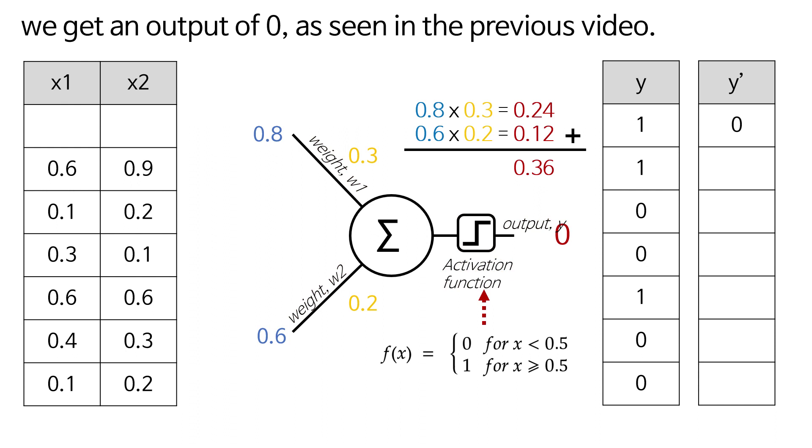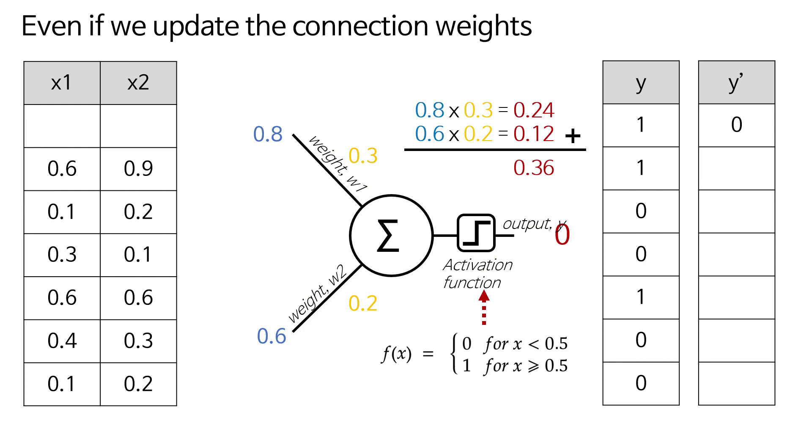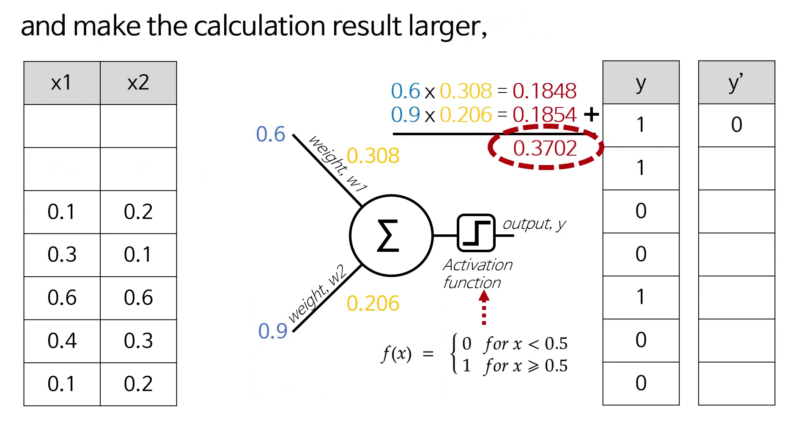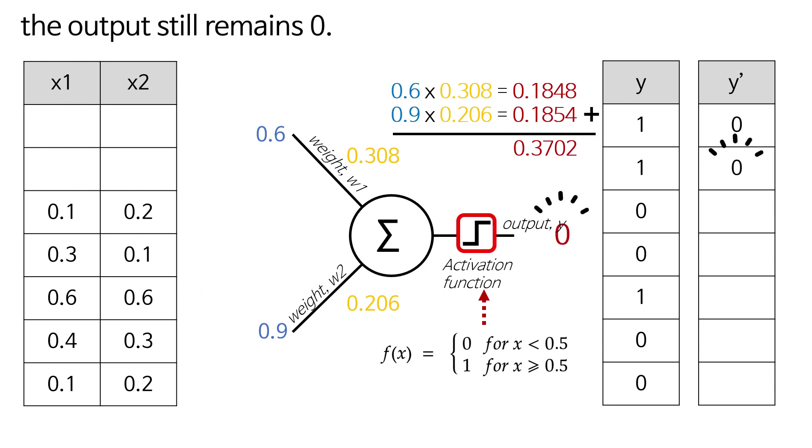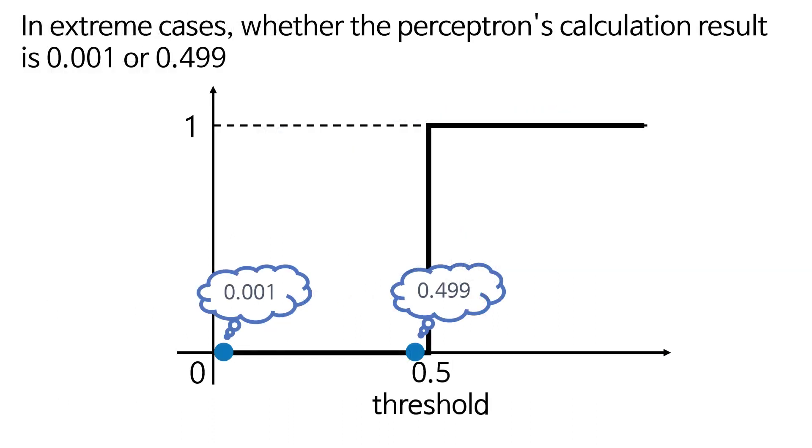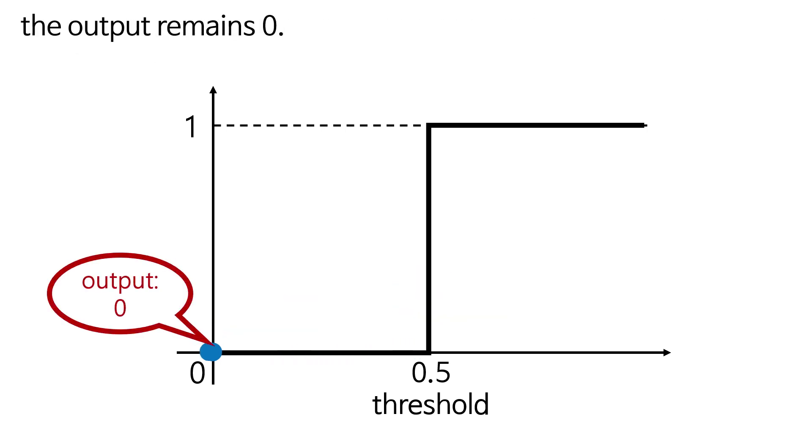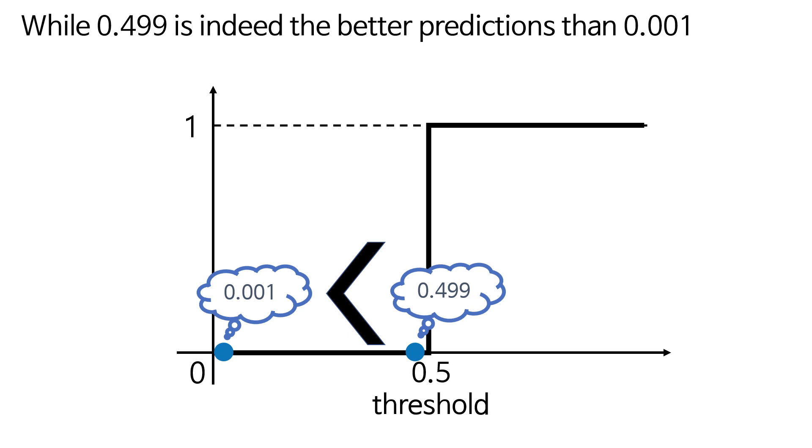As seen in the previous video, however, there's a problem. Even if we update the connection weights through the perceptron's learning algorithm and make the calculation result larger, the output still remains zero. In extreme cases, whether the perceptron's calculation result is 0.001 or 0.499, the output remains zero. While 0.499 is indeed a better prediction than 0.001, the internal differences are ignored and the error remains the same at one.